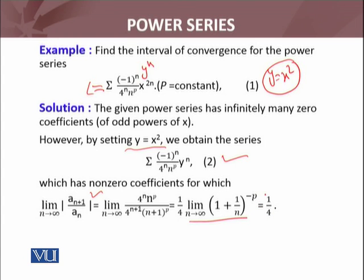So the radius of convergence for that series given in equation 2, where 1 over r is this limit, limit n approaches infinity of a_{n+1} over a_n. So radius of convergence for power series given in 2 is 4.